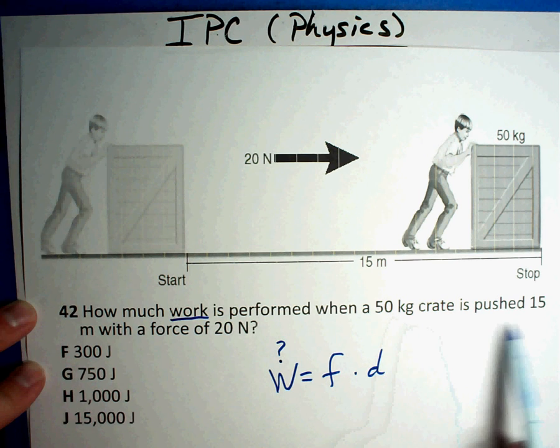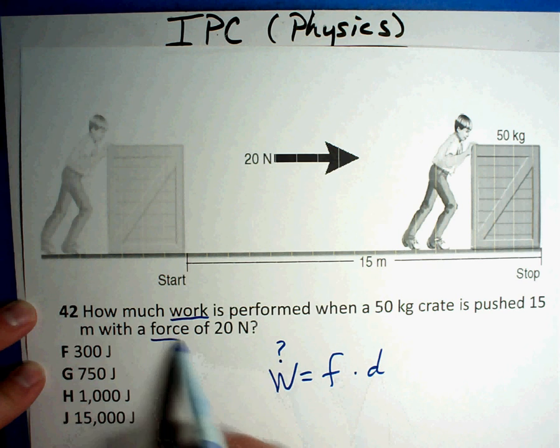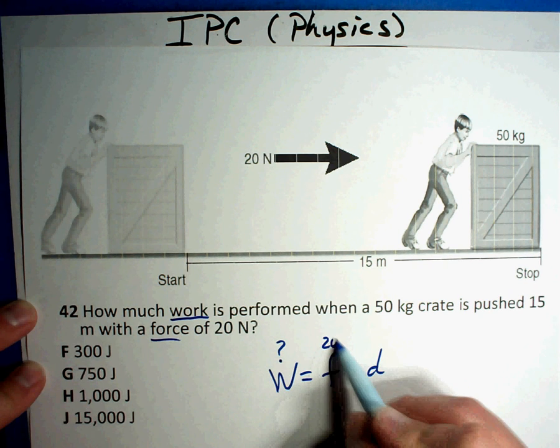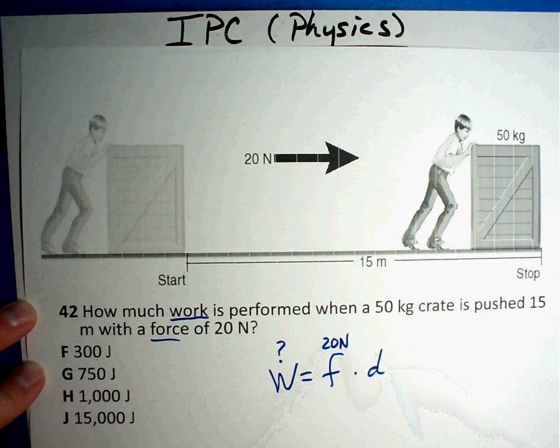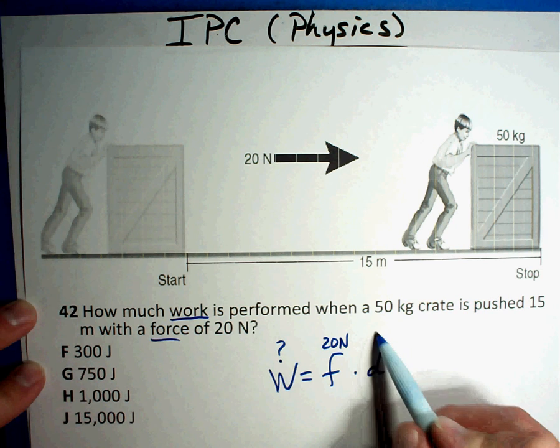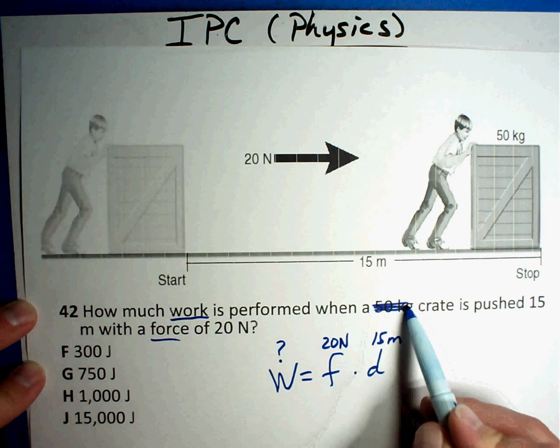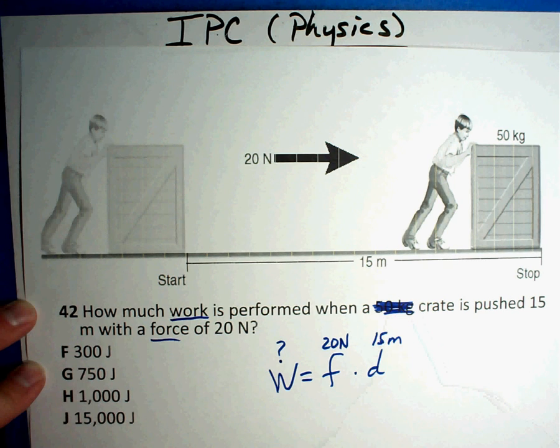How much work is performed when a 50 kilogram crate is pushed 15 meters with a force of 20 newtons? What's hard about this question is, you have, it says, how much work? There's your question mark. And they give you three numbers. One, two, three numbers. Well, the formula says it's force times distance. Well, it says force is 20 newtons, so I know that goes there. Distance, is that going to be kilograms or meters? Well, that distance is in meters. That means this is extra information. That tricks some people. You didn't need that piece of information, so you don't use it.